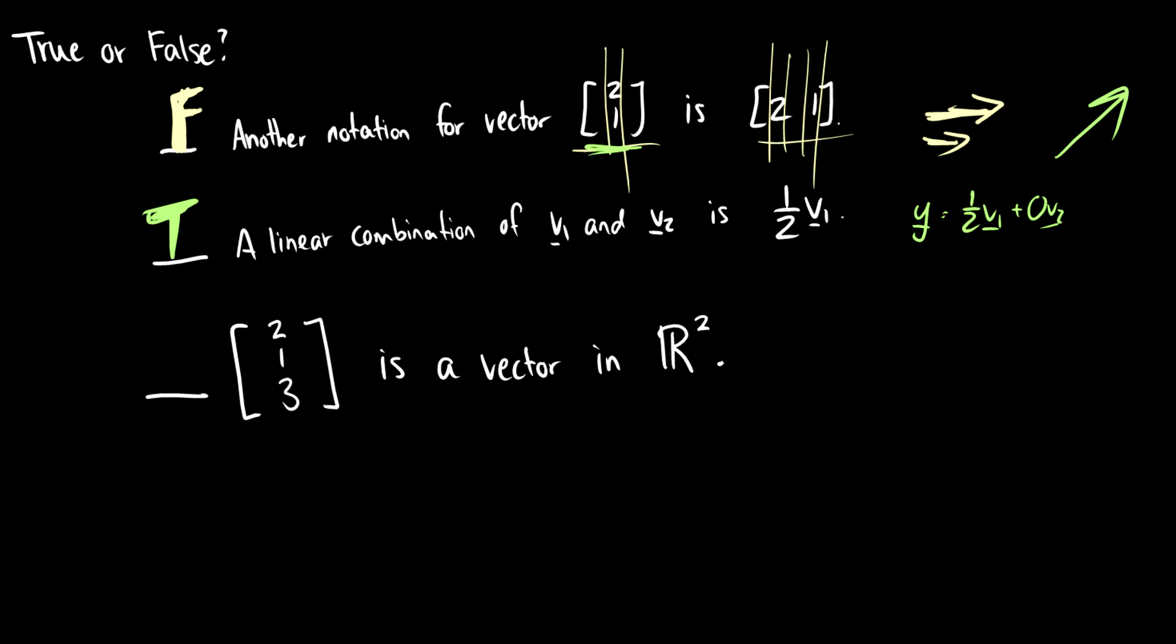Third one, the column vector [2,1,3] is a vector in R2. So this means that we can represent this vector in a two-dimensional plane. And that is false because this has three entries in it, one, two, three entries. So that means that we need three dimensions to represent this vector because it corresponds to the points 2, 1, 3.